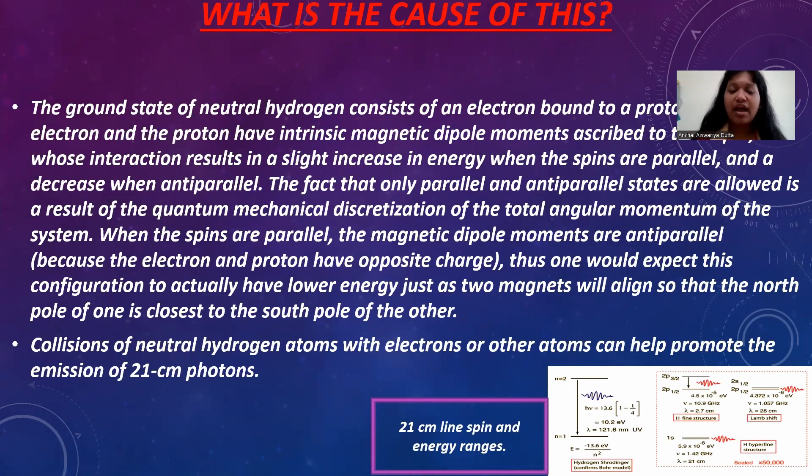It can have two orientations, parallel and anti-parallel to the proton spin. Now, when the electron spin flips from one orientation to the other, from parallel to anti-parallel or vice versa, it undergoes an energy transition. This transition emits or absorbs electromagnetic radiation.